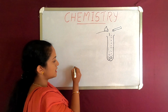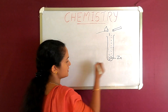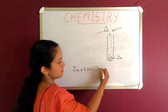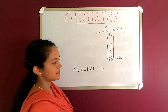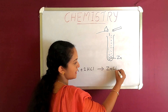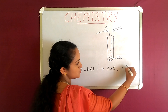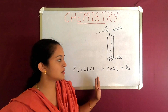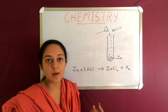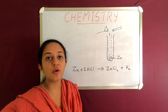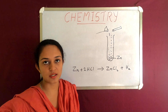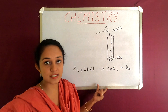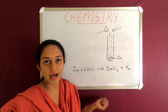Let's take a look at this equation. This is zinc metal. Zinc plus 2HCl — hydrochloric acid — forms zinc chloride and H₂ gas. Hydrogen gas is formed. Now we have one characteristic: when acid reacts with a metal, hydrogen gas is formed. That is one of the characteristics of acids.